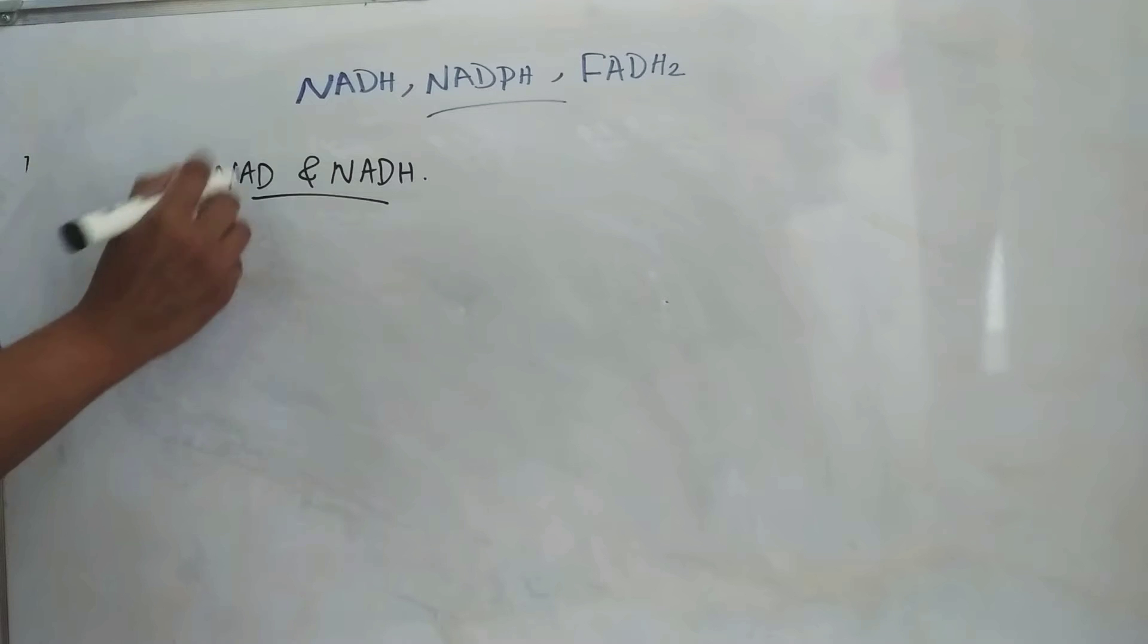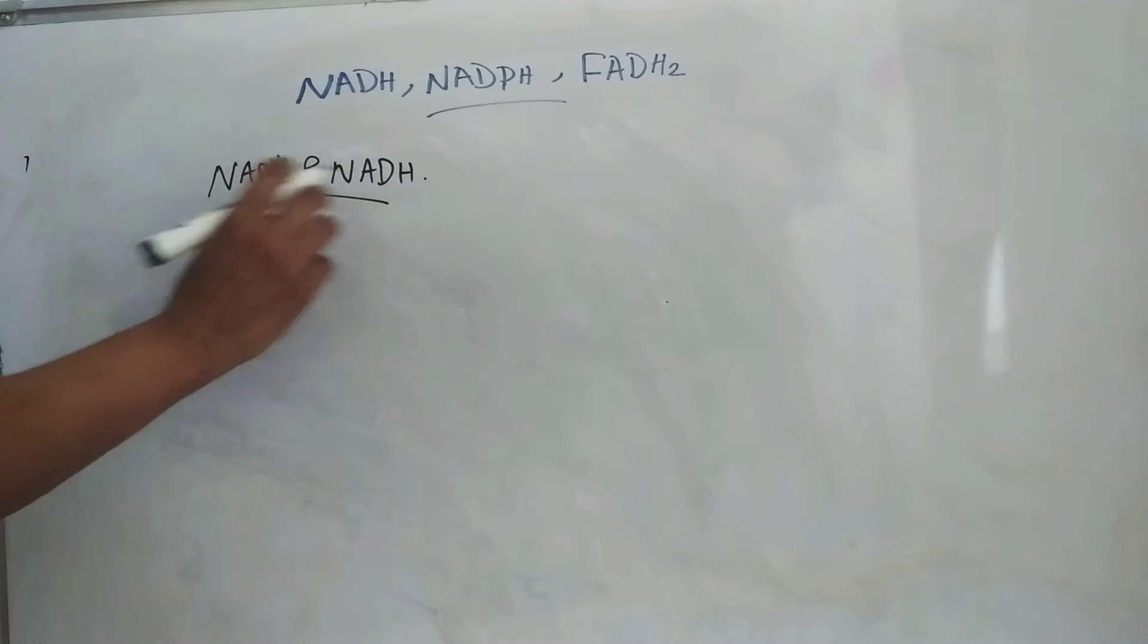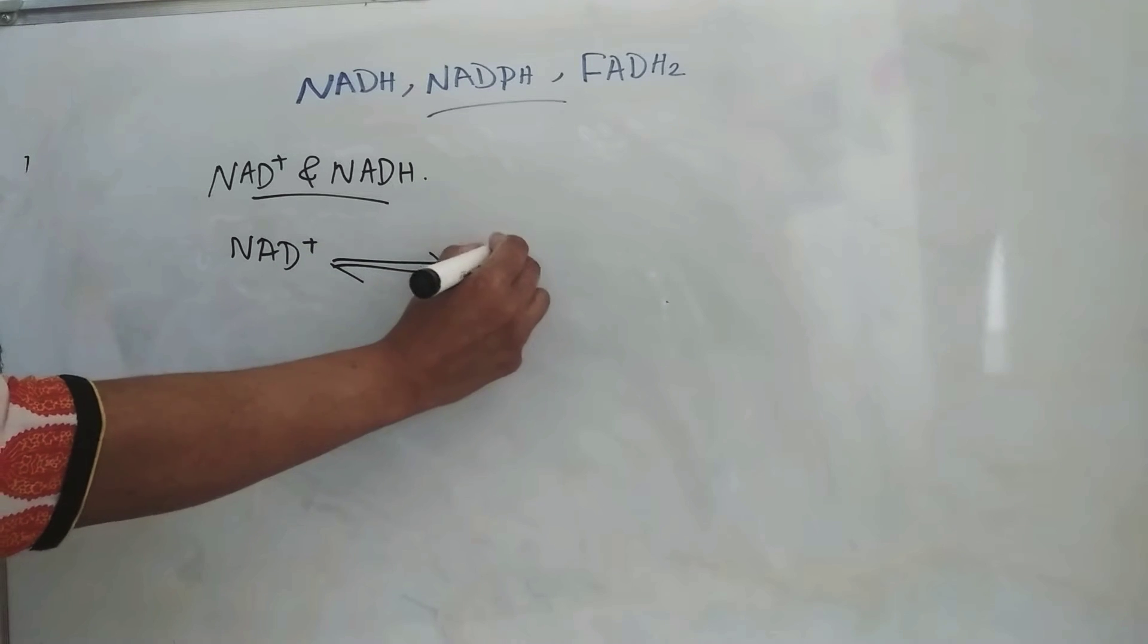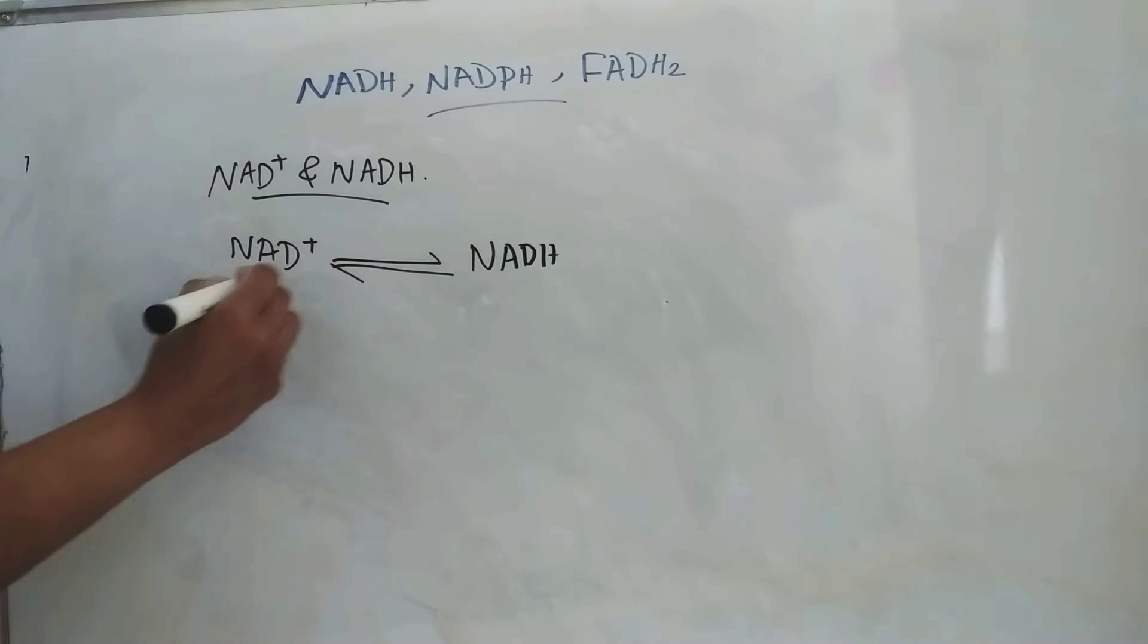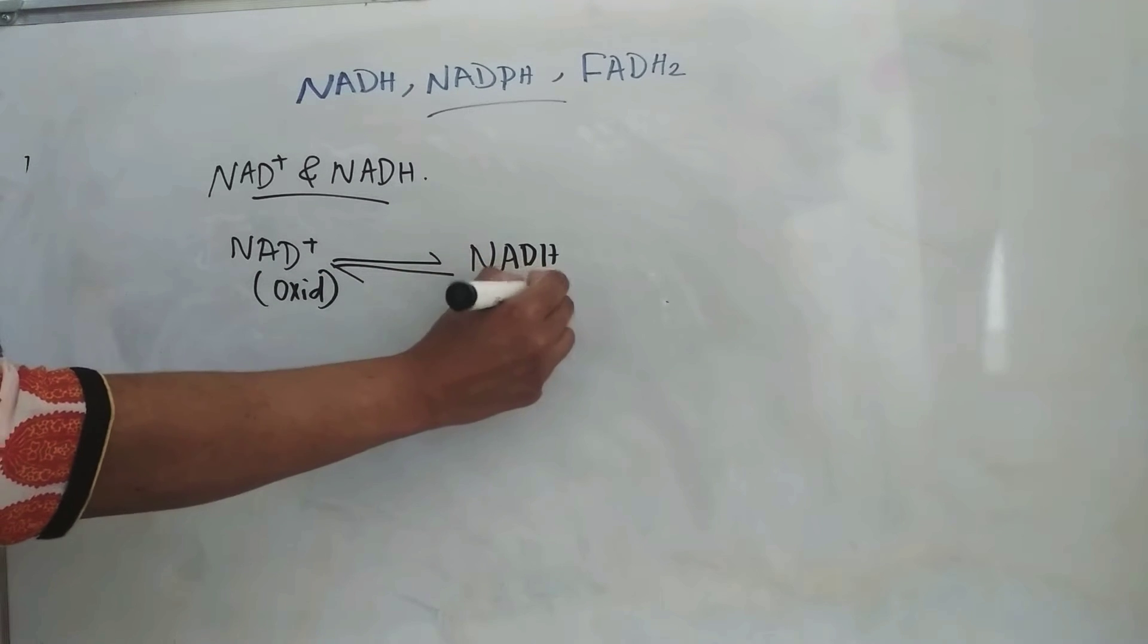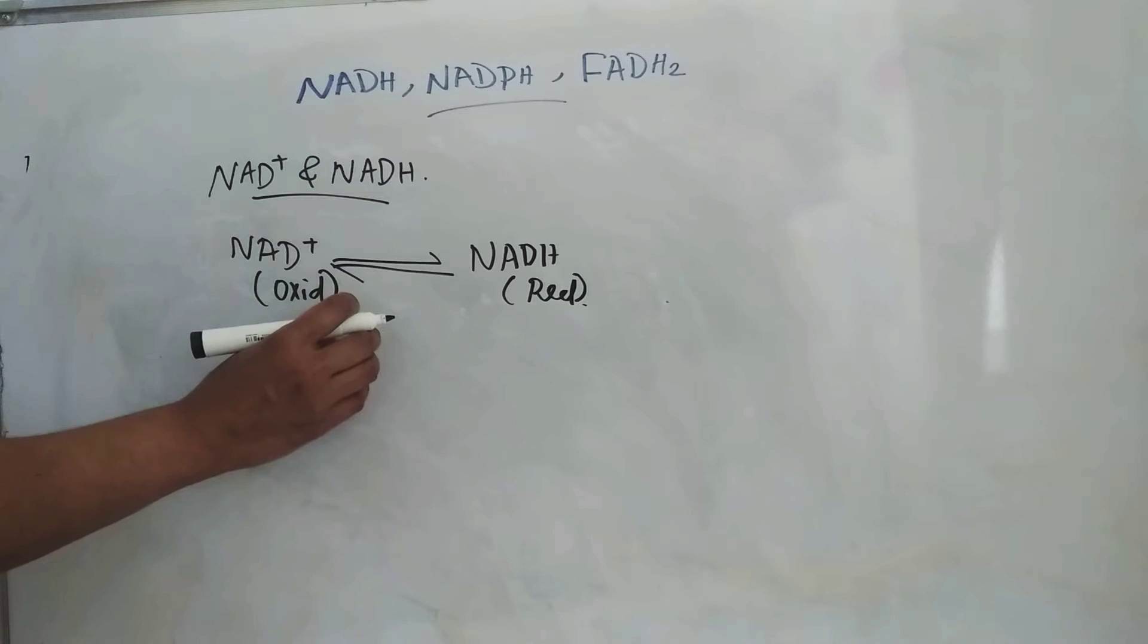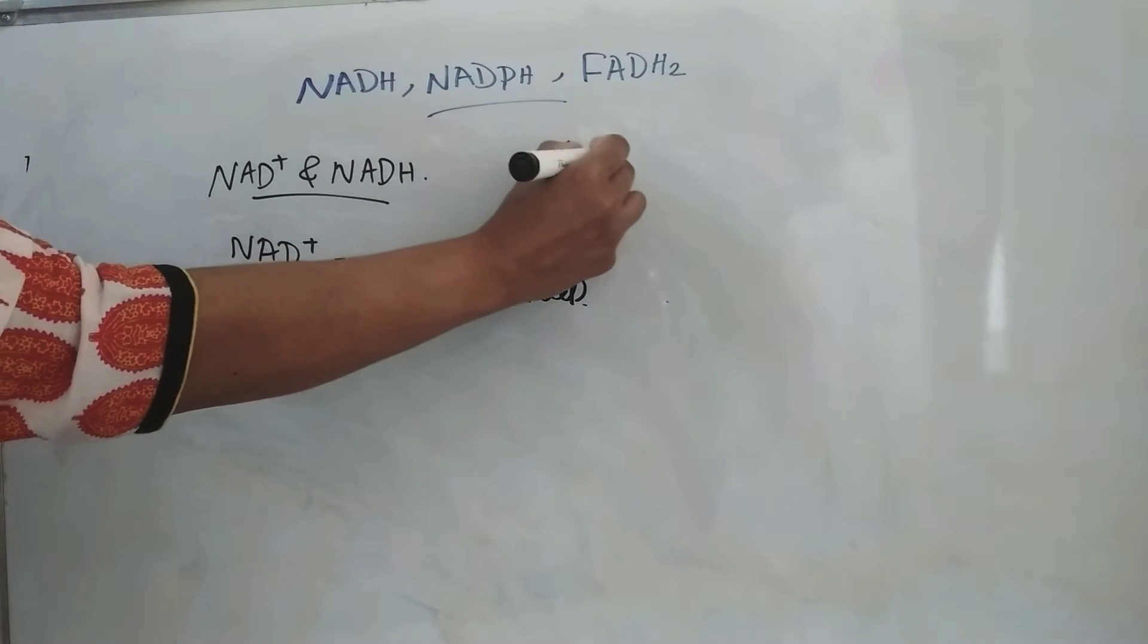Here, NAD plus and NADH. NAD plus is the oxidized form and NADH is the reduced form, and both these are interconvertible. NAD plus is a derivative of vitamin B3, that is niacin.